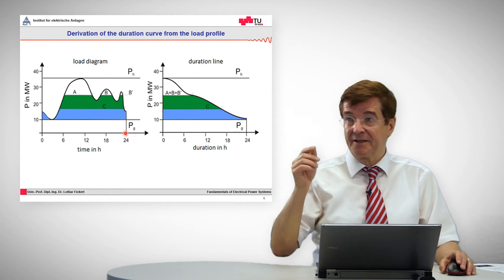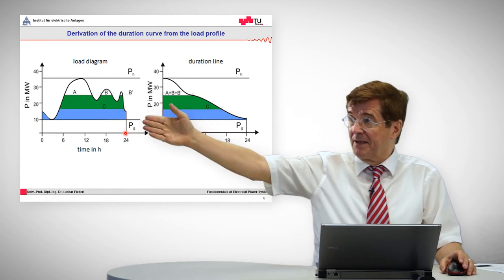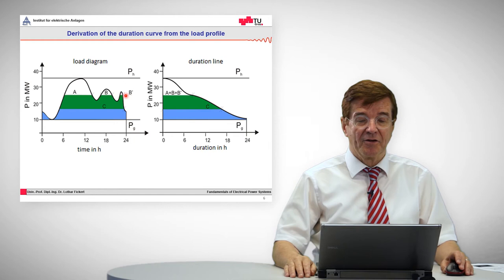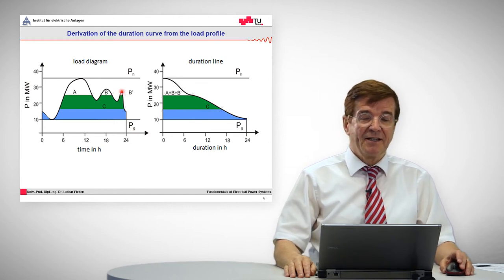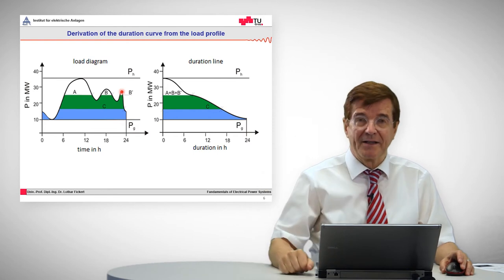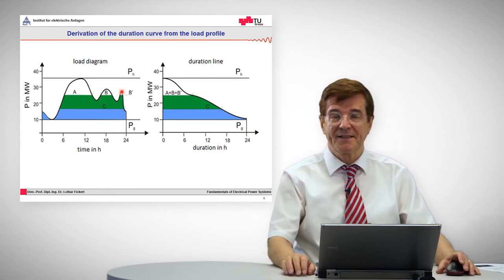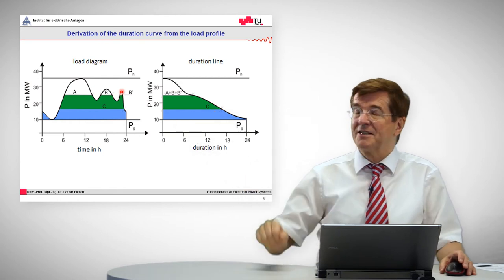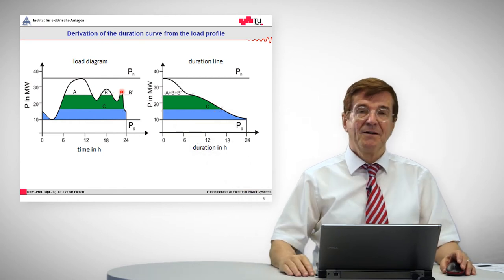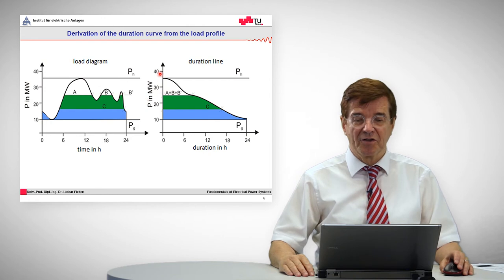Again you can see here we have this peak at lunchtime, the peak in the evening and also maybe a peak for the electrical water generation. This is the load curve that goes up and down. In order to process the data more easily we turn to the duration line which is derived from the load diagram by the so-called assorted load lines.